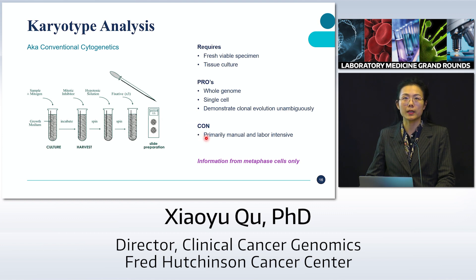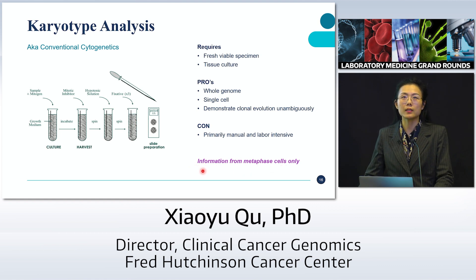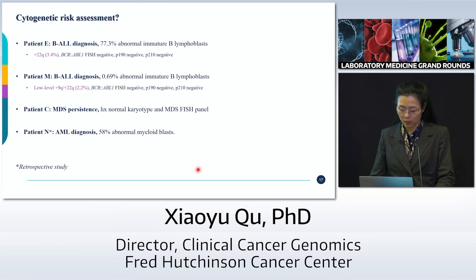The drawback is that karyotype is very manual and labor intensive — usually we can only report out 20 cells. Notably, this assay reveals abnormalities from metaphase cells only. In a way, cancer cells love to grow, so if you give them the right environment in culture, you can reveal them quite readily. Karyotype is a standard workup done in cytogenetic labs across the nation.